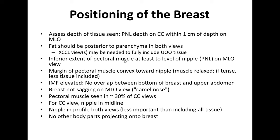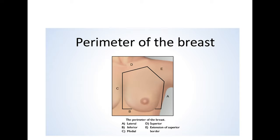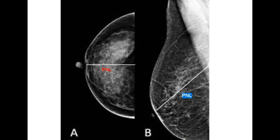Fat should be posterior to the parenchyma in both images. The inferior extent of the pectoralis muscle should be at least at the level of the posterior nipple line on MLO view. The margin of the pectoral muscle should be convex towards the nipple. The inframammary fold should be elevated with no overlap between the bottom of the breast and the upper abdomen. For cranio-caudal view, the nipple should be in midline; for MLO view, the nipple should be in profile. No other body part should project onto the breast in the mammographic image.